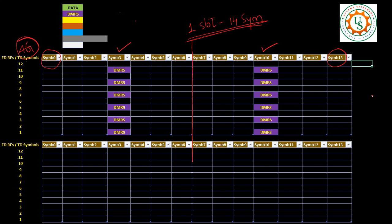If you see the first seven symbols, the DMRS is located at the center, and in the second seven symbols from 7 to 13 it is also present at the center. This was a pretty much static configuration, and in case of 4G the support was up to 120 kilometers per hour only, as per the 3GPP specification.